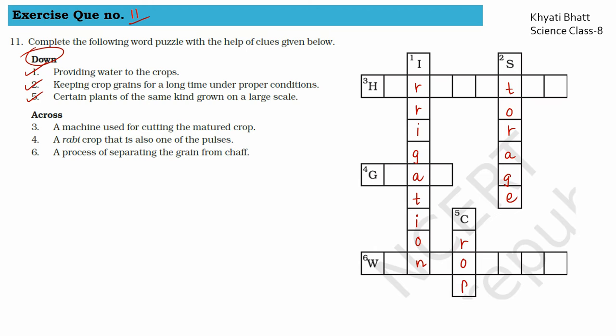Now across clues. Third one: a machine used for cutting the matured crop. It starts with H, so it is harvester. Then fourth, a rabi crop that is also one of the pulses. It starts with G, so it is gram.